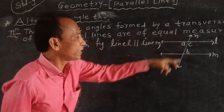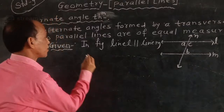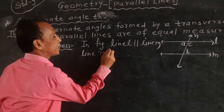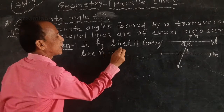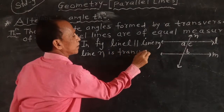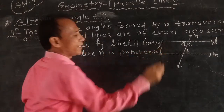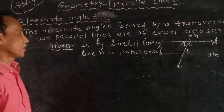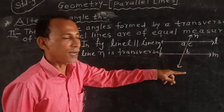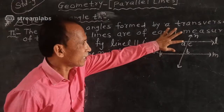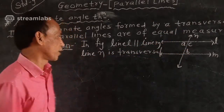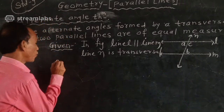The line here is the transversal. Then the pair of alternate angles — that is, angle A and angle B — are congruent. We need to prove this.